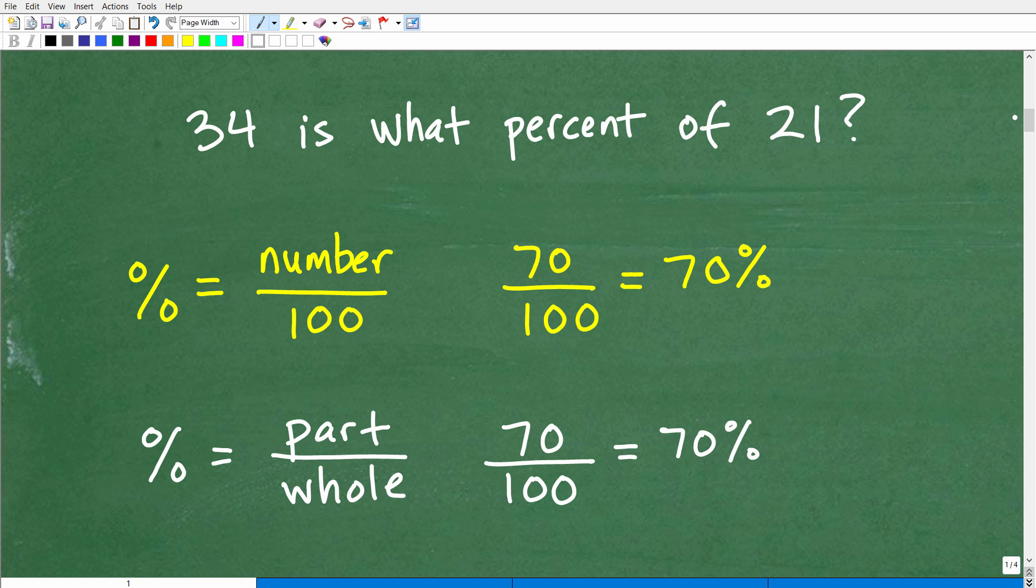Now, let's just define percent. Okay, so 34 is what percent? Well, what is percent? Well, the definition of percent, the kind of technical definition, is a ratio of a number compared to 100 or a fraction such that the denominator is 100.